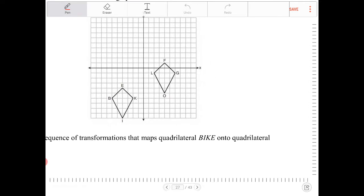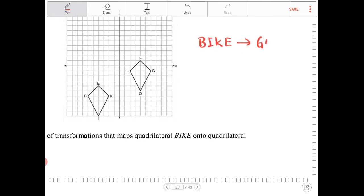So, understanding the mapping here, B-I-K-E mapping onto G-O-L-F: B corresponds with G, I corresponds with O, K corresponds with L, and E corresponds with F. It is important that you are aware of this,